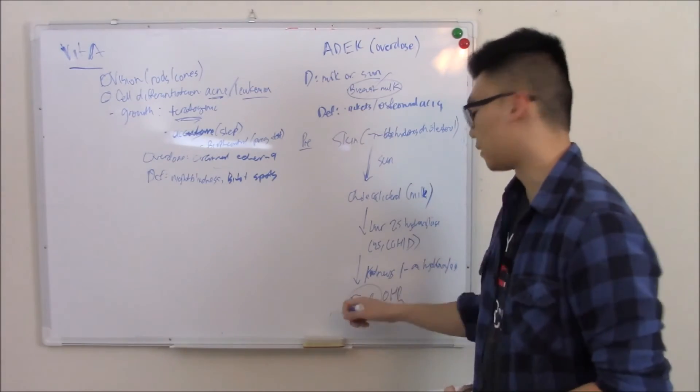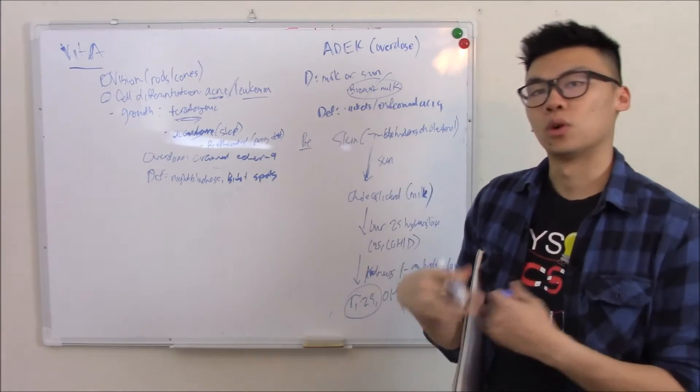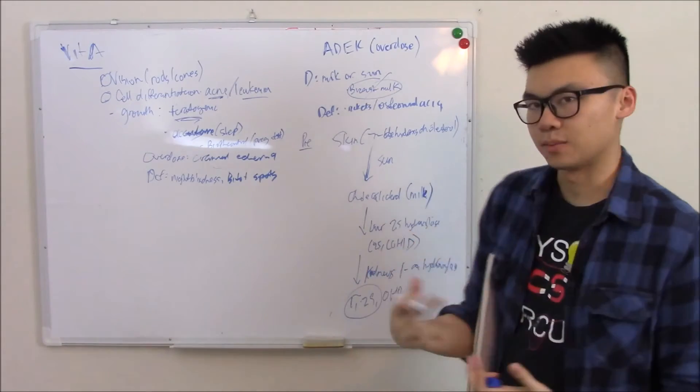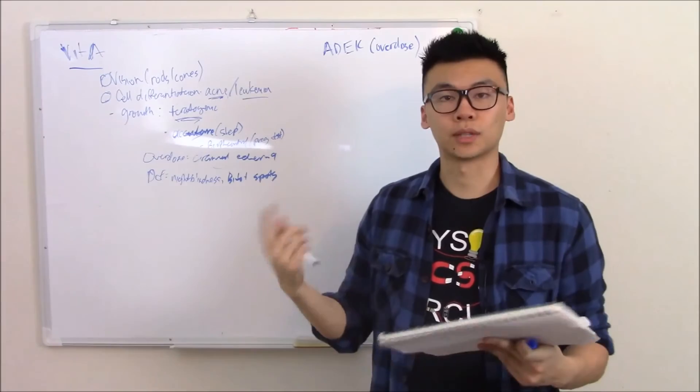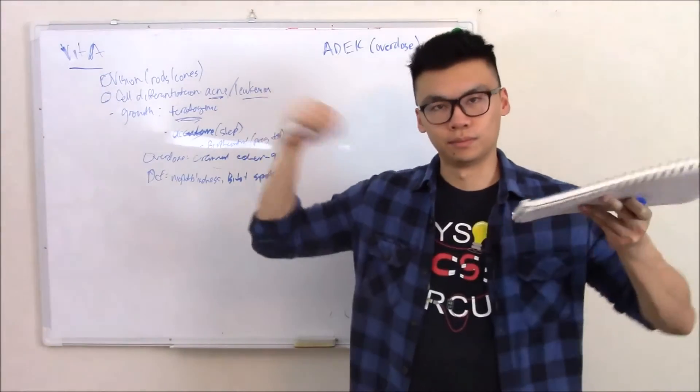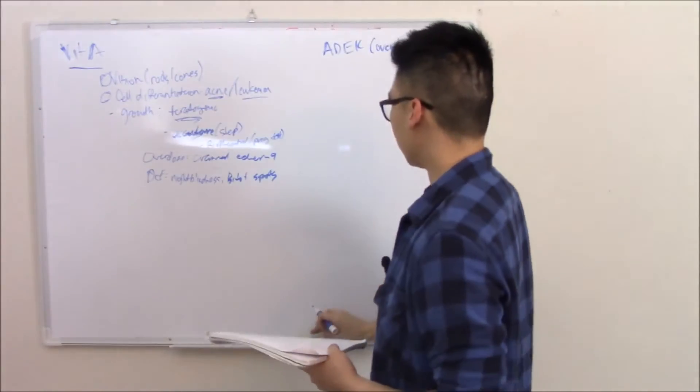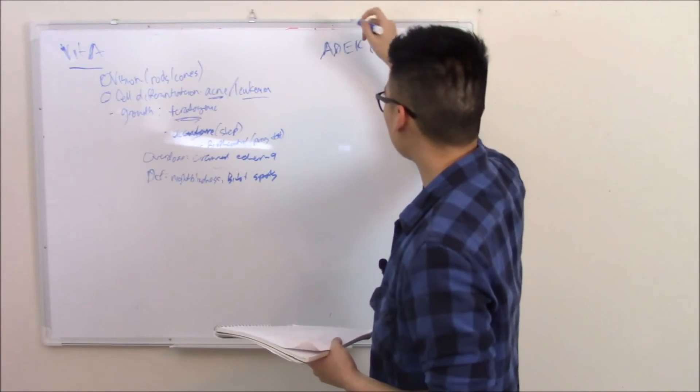And 1,25 is the active form. That's where it can do what vitamin D does. Vitamin D increases your gut and your renal uptake of things like calcium and phosphate to help build bones. So that is vitamin D.